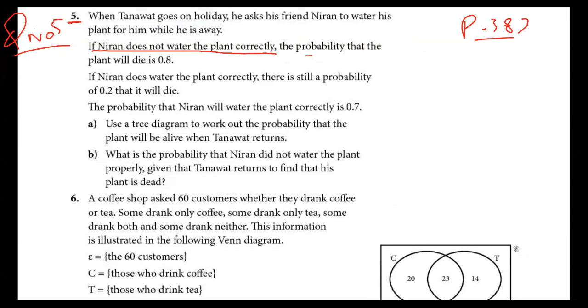So no water correctly, the plant will die. What is the chance of dying? 0.8. If Niran does water the plant correctly, this branch I have water correctly. So this is dash 10 for not correctly, this without is called water correctly. When there's still probability of die is 0.2, so die probability is 0.2.